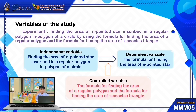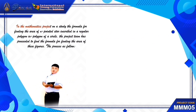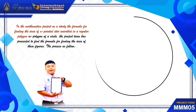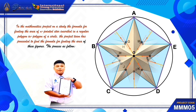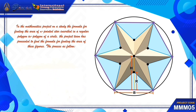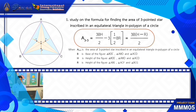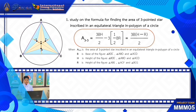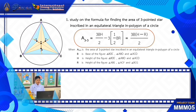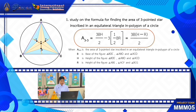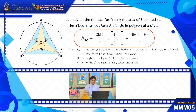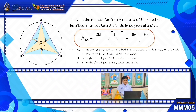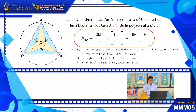The formula for finding the area of an isosceles triangle is used as a basis. The formula for finding the area of an n-pointed star inscribed in a regular polygon in a circle is: A_G equals one-half times B times H, minus one-half times B times R. So A_G equals one-half times B times the quantity H minus R. Where A_G is the area of the star inscribed in a regular polygon in a circle.